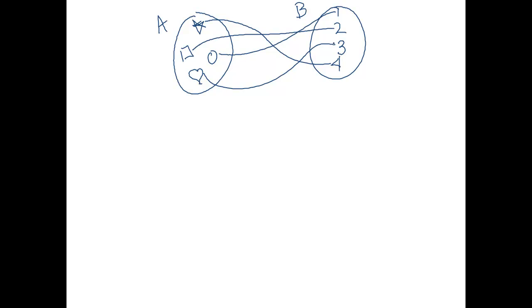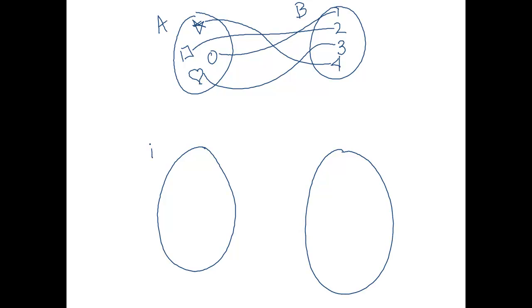We can also extend this concept to infinite sets. Let's make two infinite sets. We'll call the first one A prime and the second one B prime. A prime is the set of all strings over the alphabet {a}. So it looks like: a, aa, aaa, aaaa, and so on forever. If it's all strings, I can take any string in A prime and add a little a to the end of it, and I have a new string. So this set goes on forever.